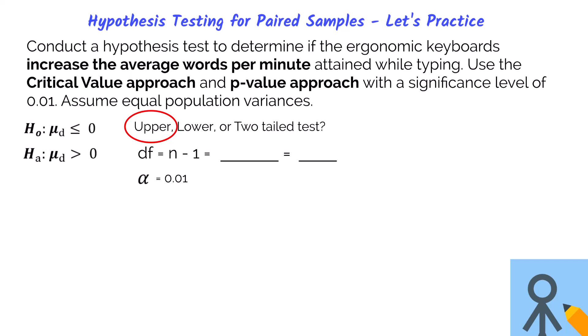Next we want to make sure we identify the degrees of freedom. Since we are working just with one population, in this case the population of administrative assistants typing on a keyboard, we will use the sample size of 10 administrative assistants minus one and we get nine for the degrees of freedom. For hypothesis testing for paired samples, we will only be working with t values and we'll be using Excel again to help us with the calculations.